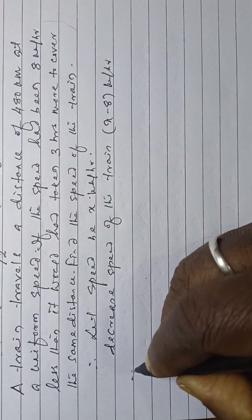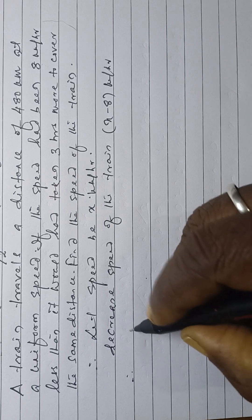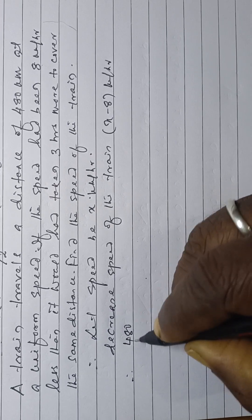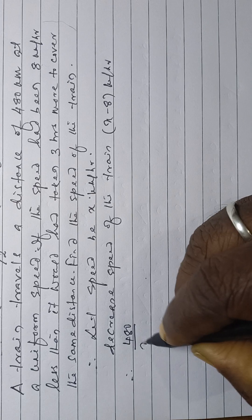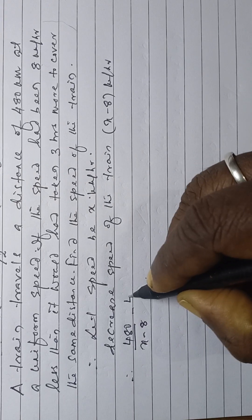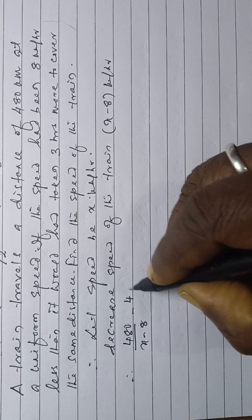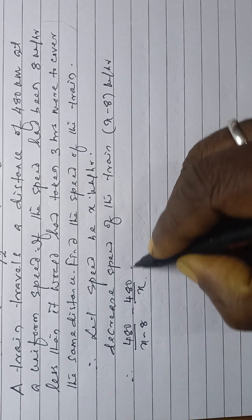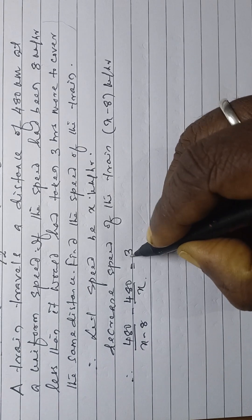Now, according to statement, this is 480 divided by x minus 8 minus 480 by x is equal to 3 hours.